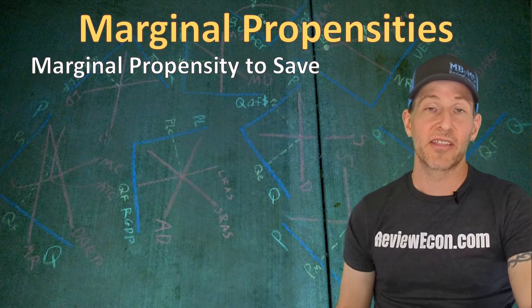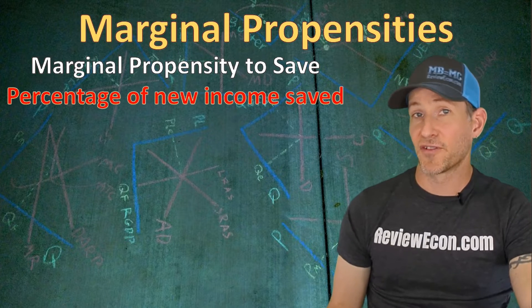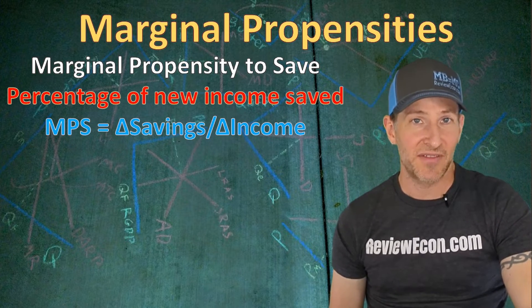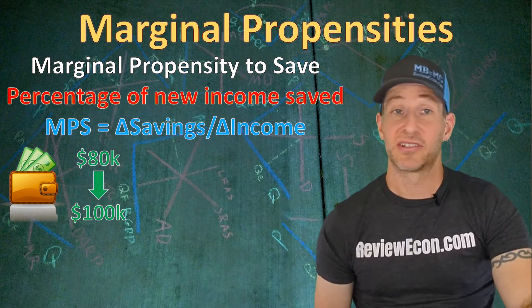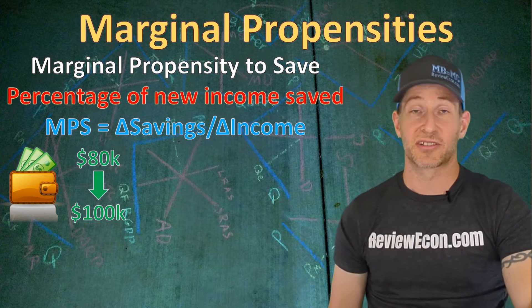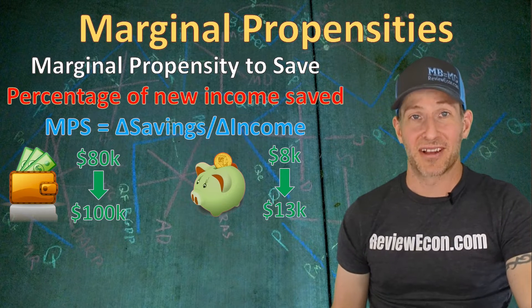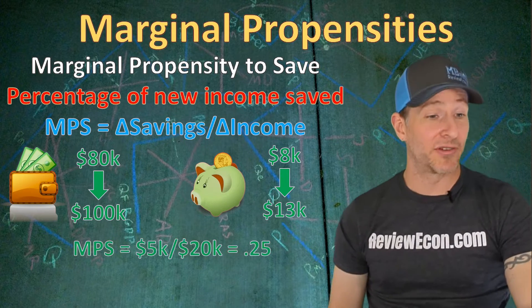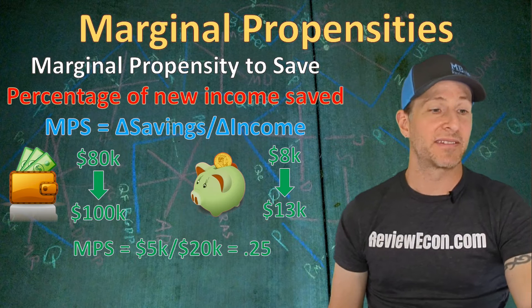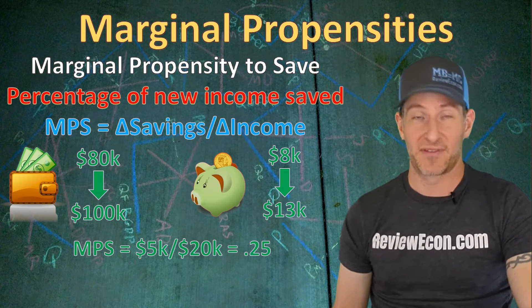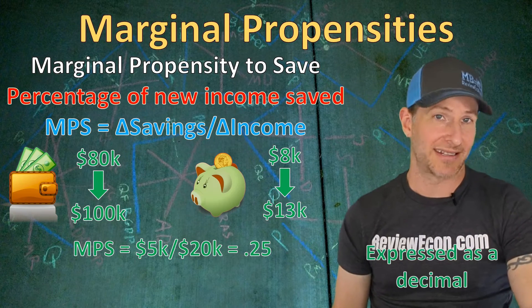The marginal propensity to save is the percentage of new income that is saved rather than spent. The formula is the change in savings divided by the change in income. My income increased from $80,000 to $100,000 — a change of $20,000. My savings increased from $8,000 up to $13,000, a change of $5,000. So we take $5,000 divided by $20,000, and that gives a marginal propensity to save of 0.25 — meaning 25% of new income is saved, expressed as a decimal.